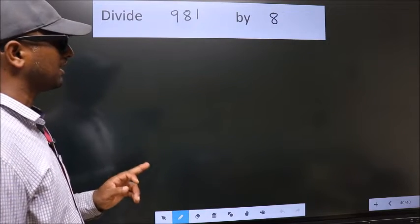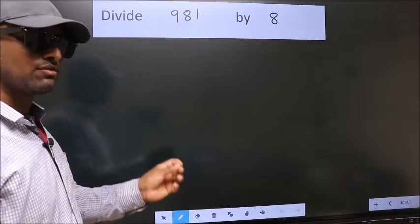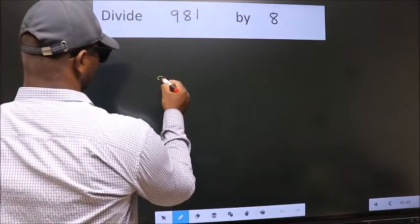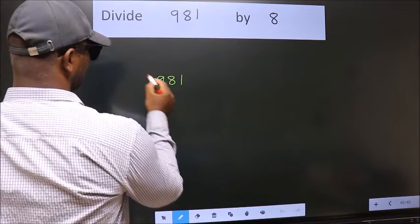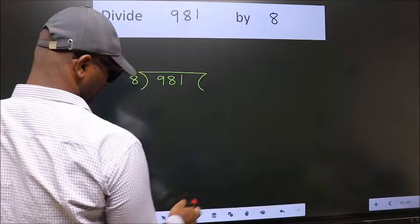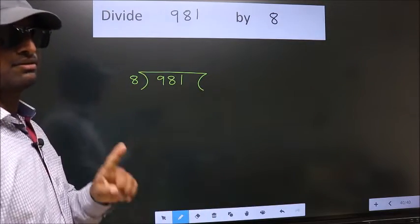Divide 981 by 8. To do this division we should frame it in this way. 981 here, 8 here. This is your step 1.